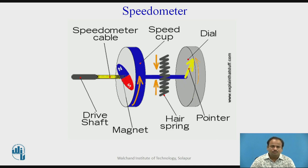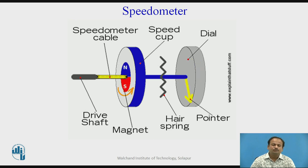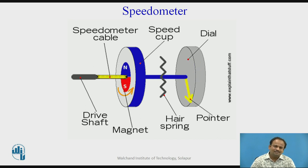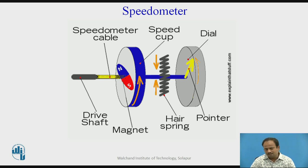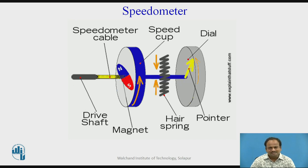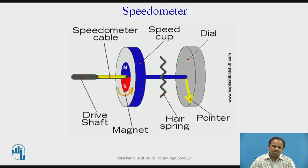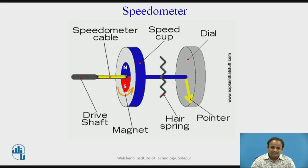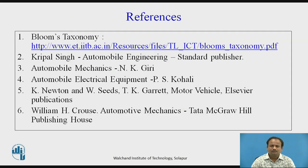Likewise, this particular speedometer works and gives us the actual reading of the vehicle's speed in kilometers per hour. This particular device is a very important device in our vehicle. Whenever a driver looks at it, he comes to know at what speed the vehicle is running and realizes how much speed is required for a particular road surface. So this is the perfect indicator to help the driver balance his vehicle. These are the references — please refer.